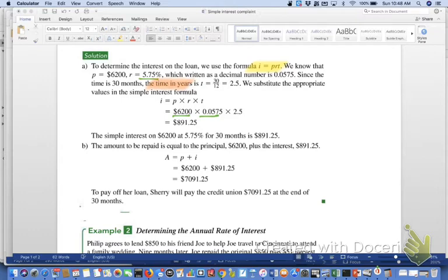Because time is in years and the problem gives you 30 months, the amount of time is 30 divided by 12 months in a year, which equals 2.5 years. They use this in the formula. No big deal, right?